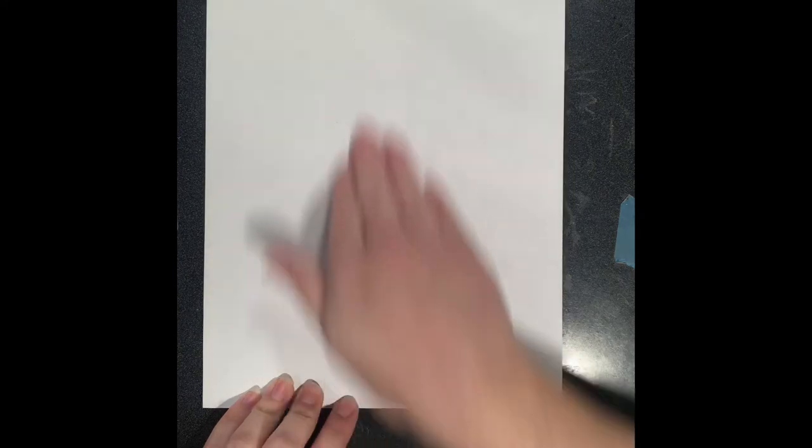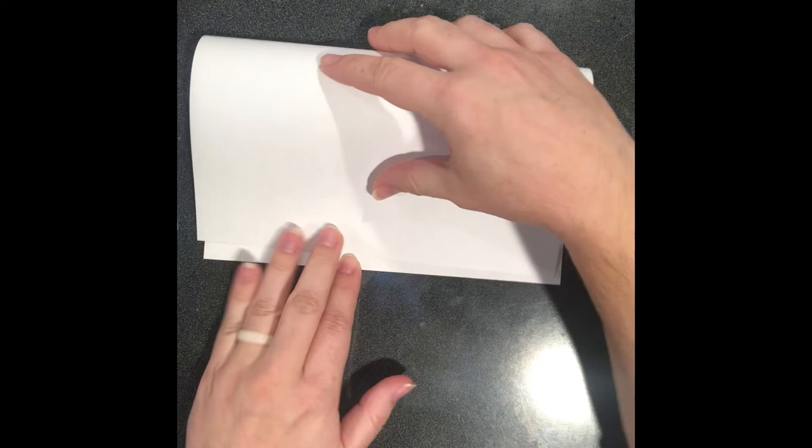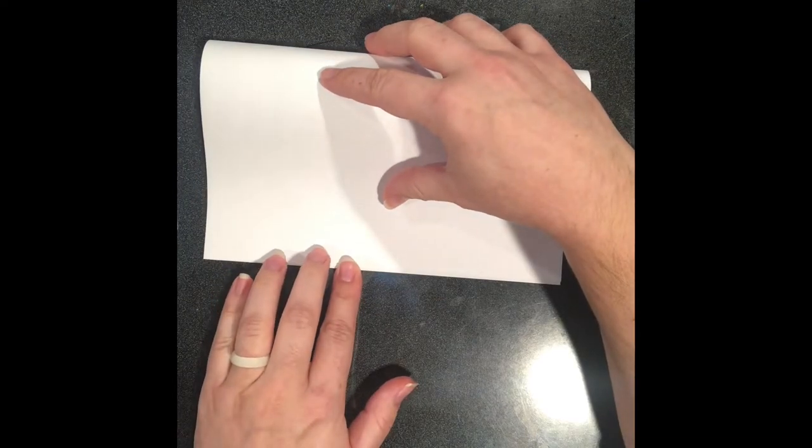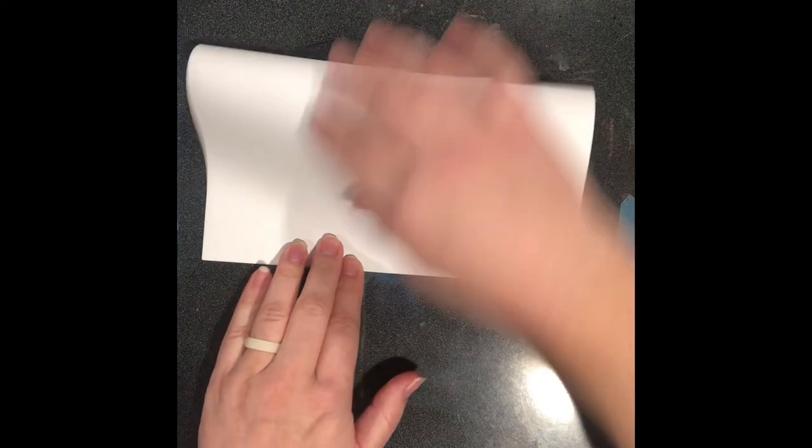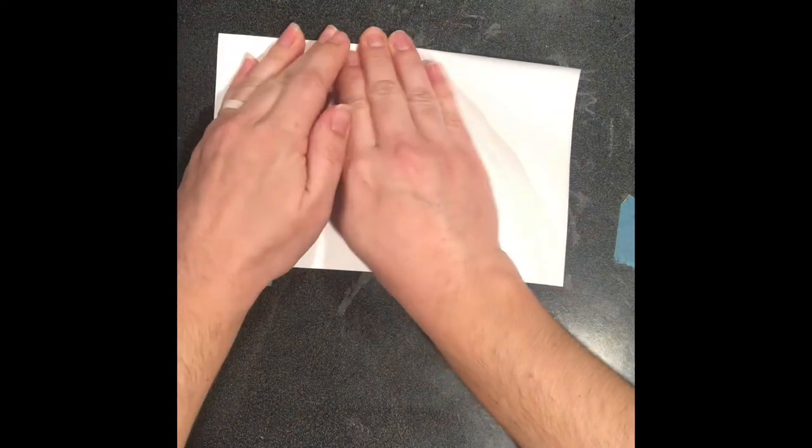Grab your paper at the top. My paper is turned portrait style or tall like a building. I'm going to bring the top down to the bottom. Smooth out the edges.